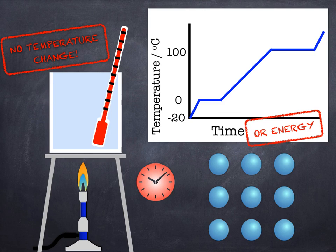So at these state changes, instead of increasing the temperature, we are breaking bonds if we're talking about a solid melting, or we're overcoming intermolecular forces if we're talking about a liquid boiling. Either way, that energy, instead of increasing the temperature, is increasing what we call the internal energy of the material.